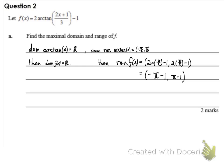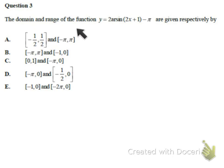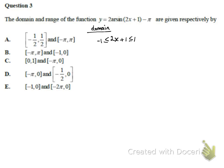Question number three: find the domain and range of the function y = 2 arcsin(2x + 1) − π. Similar to before, let's relate to the domain of a normal arcsin, which ranges from negative one to one. So the inside part, 2x + 1, has to go from negative one to one. Subtracting one from both sides and then dividing by two, we obtain the domain of our function.